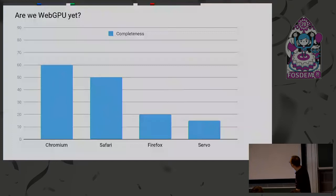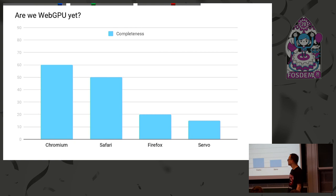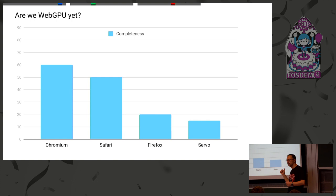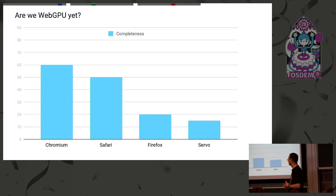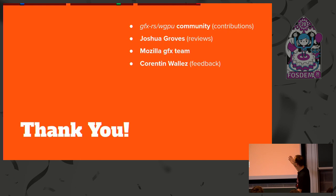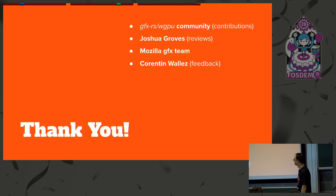This is a subjective measure of completeness between browsers. Chromium is fairly good — they have a large team and a lot of API surface implemented. We just got compute working in Firefox. You can go to Nightly, enable WebGPU in prefs, and run the compute example. We will work on presentation and rendering next. Servo is also catching up — it's easier for Servo because it's pure Rust with fewer boundaries, and it uses the same WGPU infrastructure. I'd like to thank my GFX team, the WGPU community, Josh especially, and Corentin from Google for helping with the spec and slides.